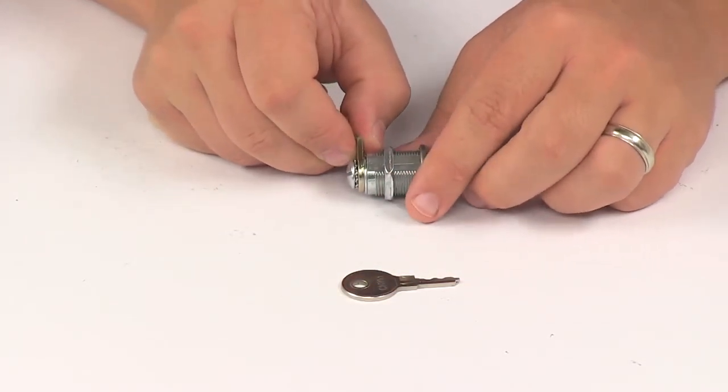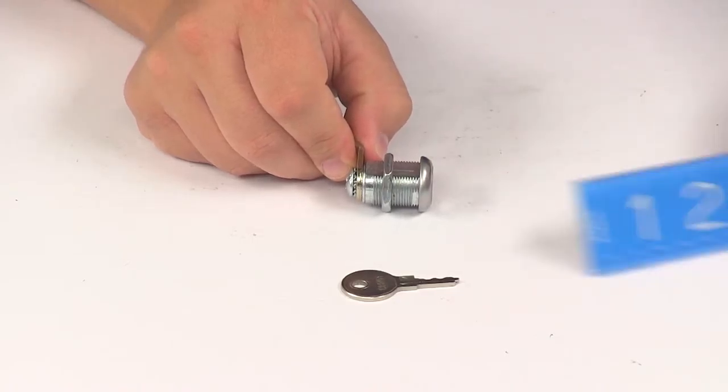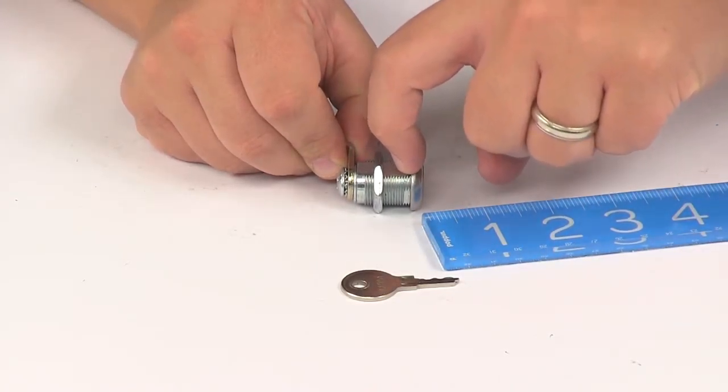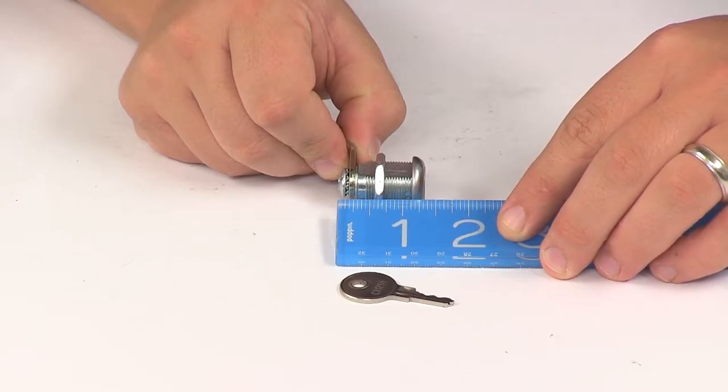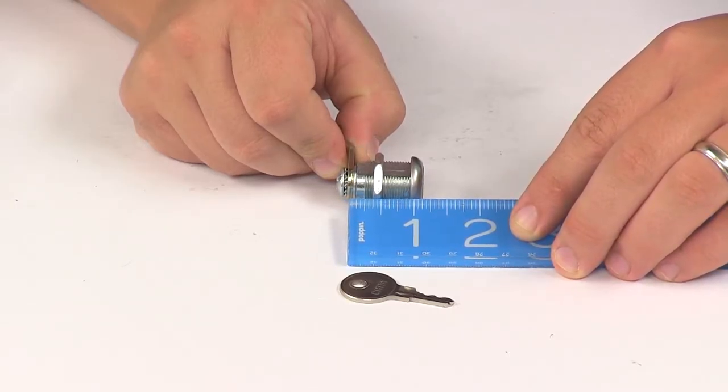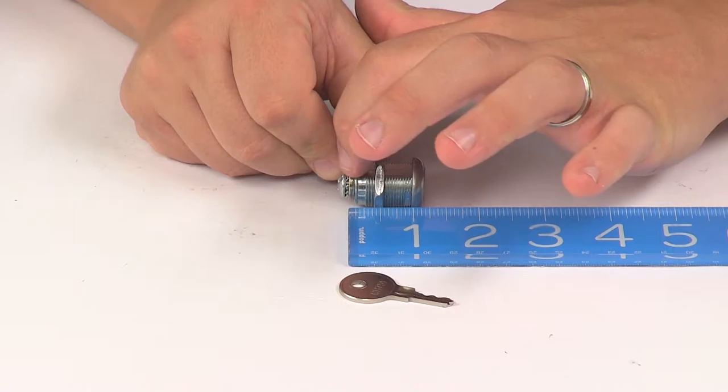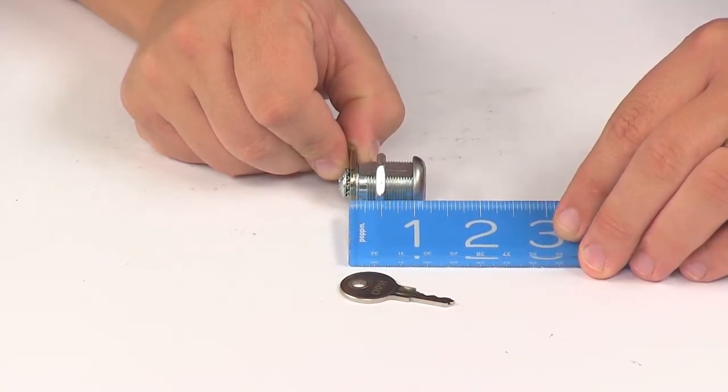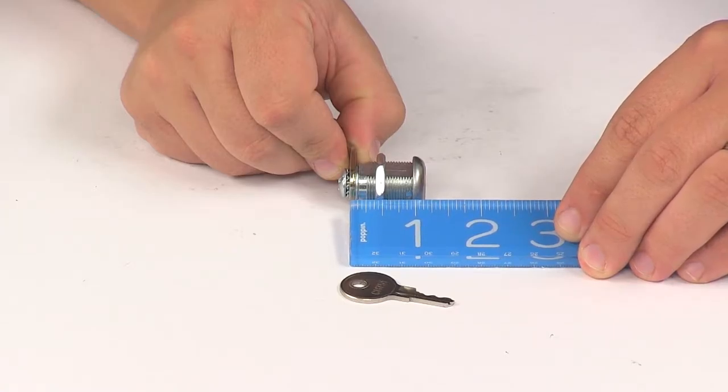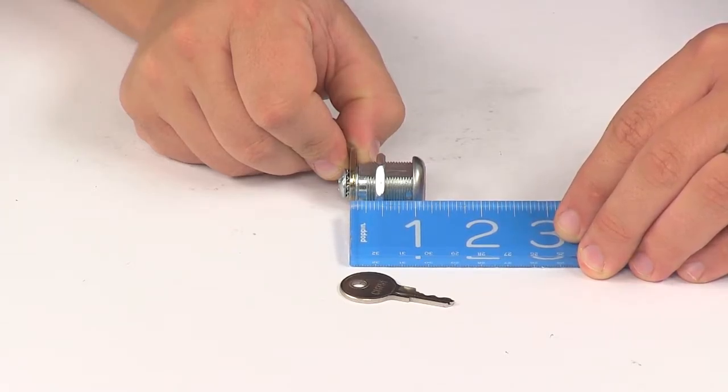From the back of the flange portion to the back of the screw head measures about one and one-eighth inches. From the front of the unit to the back side of the lever, that brass portion, also measures about one and one-eighth of an inch.